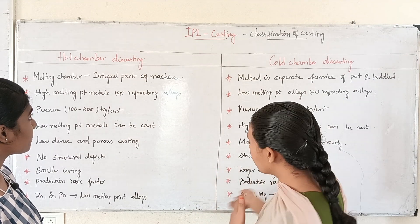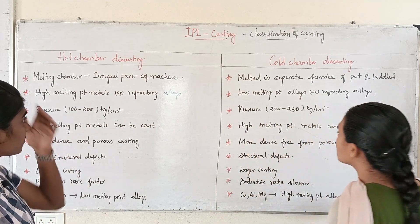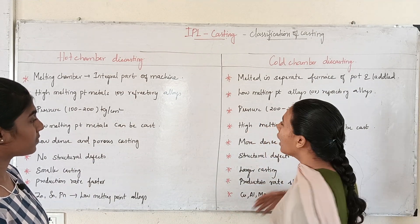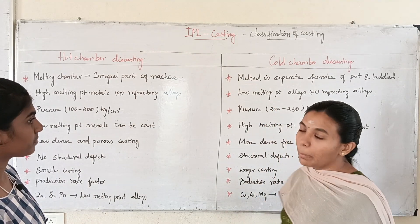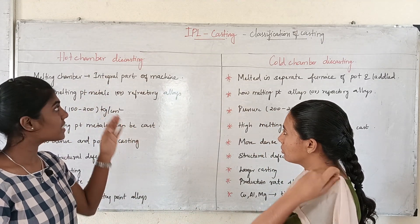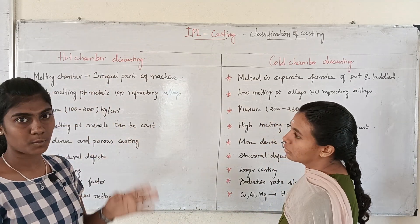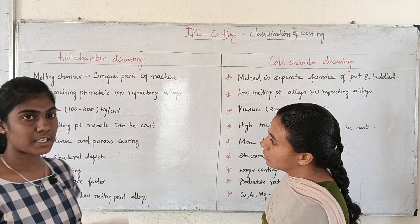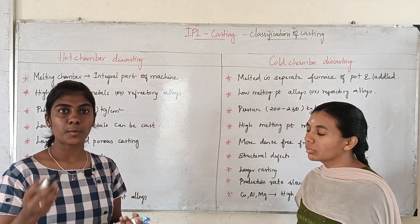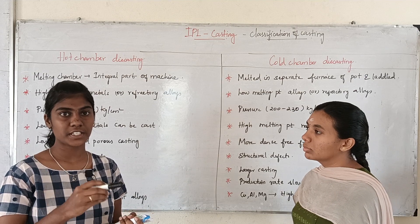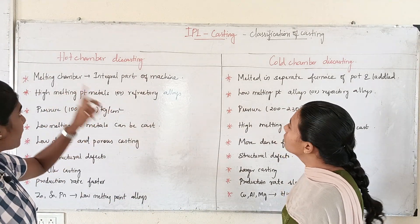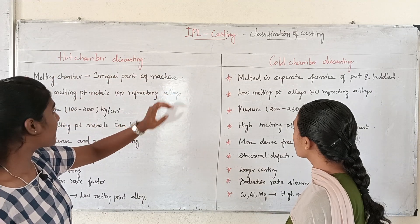The first classification of casting is hot chamber and cold chamber. Die casting is a type of permanent mold process involving molten metal and high pressure. There are two types: hot chamber die casting and cold chamber die casting.